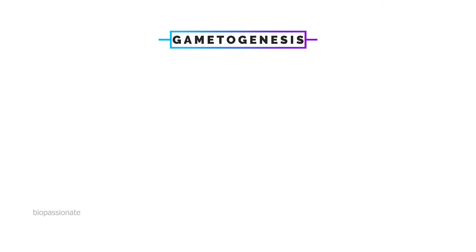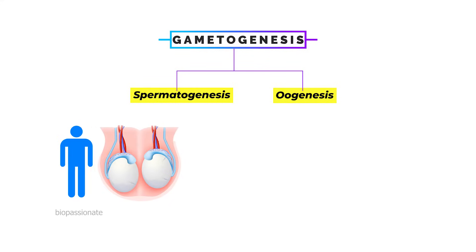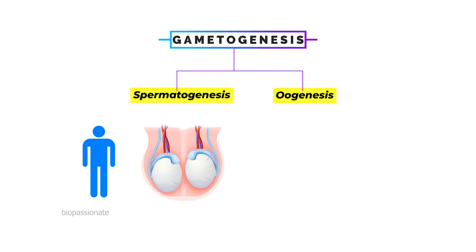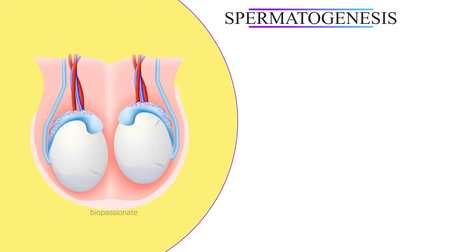Gametogenesis is of two types: spermatogenesis and oogenesis. Spermatogenesis occurs inside the testicles of the male, and oogenesis occurs inside the ovaries of the female. Now let's study them one by one. Spermatogenesis — the name itself indicates: 'spermato' means sperm cells and 'genesis' means formation.